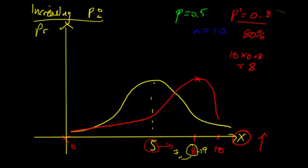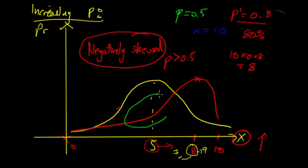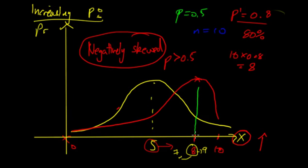This is called negatively skewed. When p is greater than 0.5, the distribution is negatively skewed. At p equals 0.5 it's symmetric; at p greater than 0.5 it's negatively skewed. The way I remember it: here's the mean, and the skew — the tail — is on the negative side of the mean. So therefore it is negatively skewed.